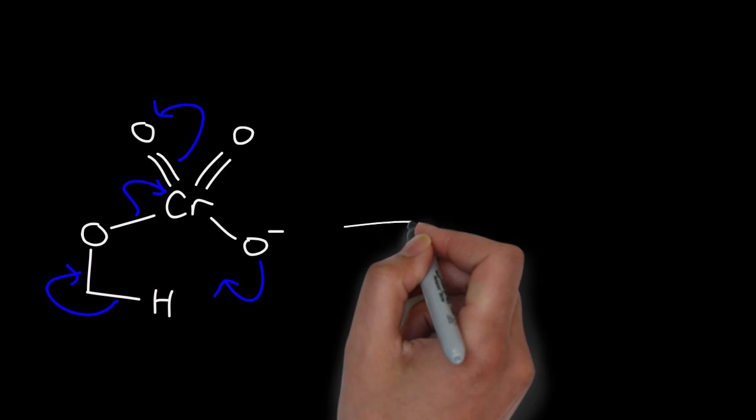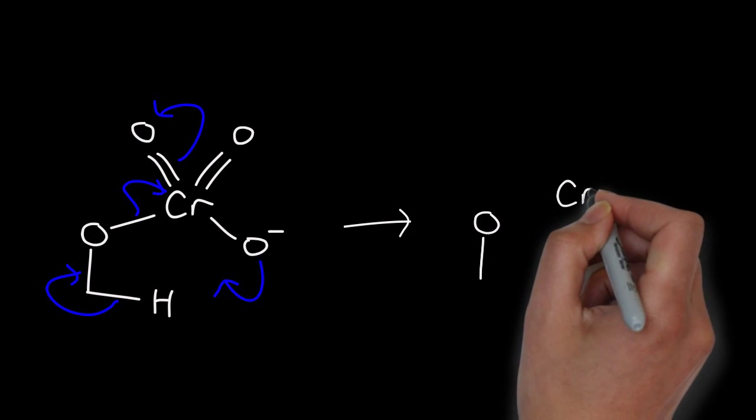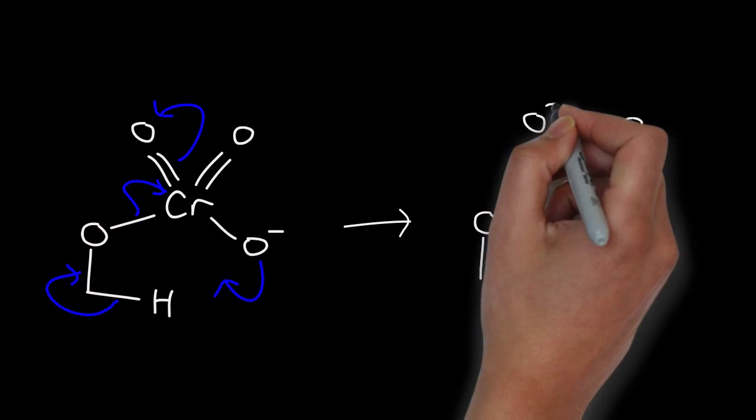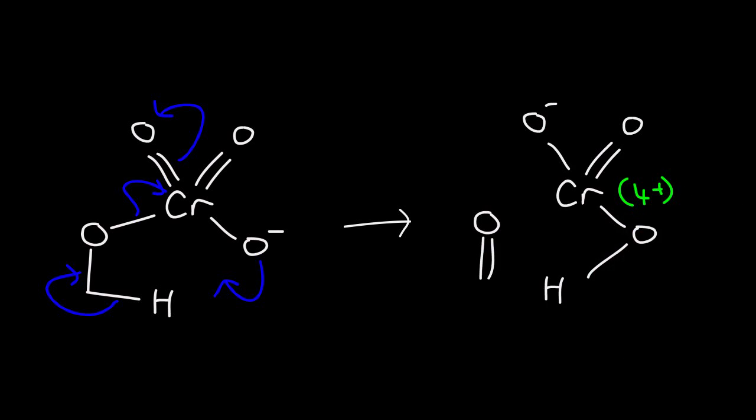Addition of an alcohol will give a chromium alkoxide, and then beta-elimination of a hydrogen, via abstraction of that hydrogen with the negatively charged oxygen on the chromium, will give the aldehyde.